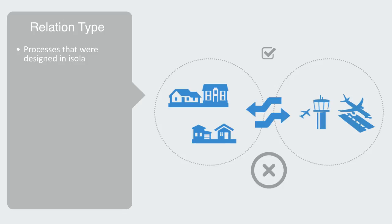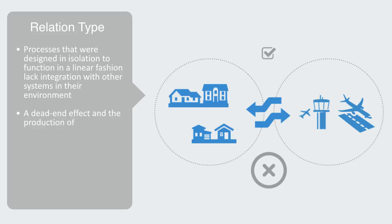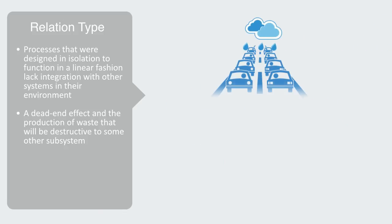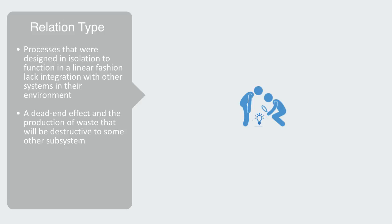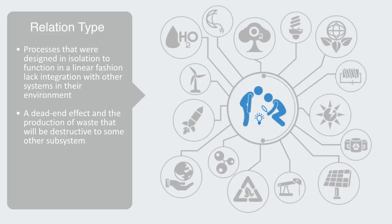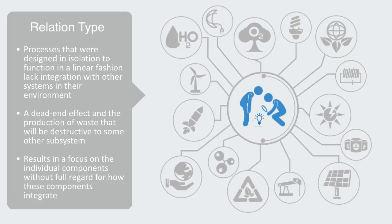Processes that were designed in isolation to function in a linear fashion lack integration with other systems in their environment. We get a dead-end effect and the production of waste that will be destructive to some other subsystem. For example, when we build large tarmac surfaces that can't absorb rainwater, the result is a high level of runoff that needs to be dealt with by the wastewater system. This is often the case when we use a reductionist design paradigm — it results in a focus on individual components without full regard for how these components interrelate to give us the functionality of the whole system. Thus, we often end up with optimal solutions on the micro level, but sub-optimal solutions on the macro scale.